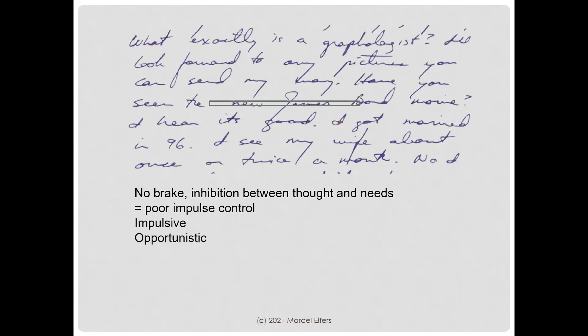People like this tend to be reactive and come into action immediately, and therefore they don't see limitations and are opportunistic.